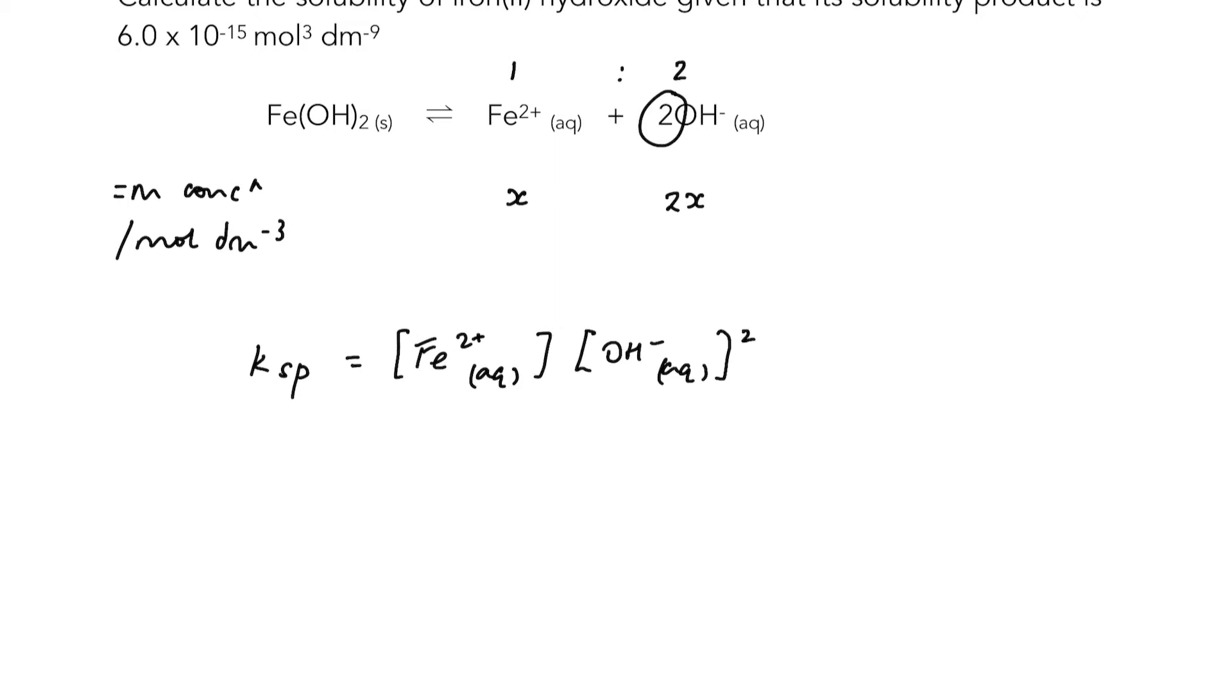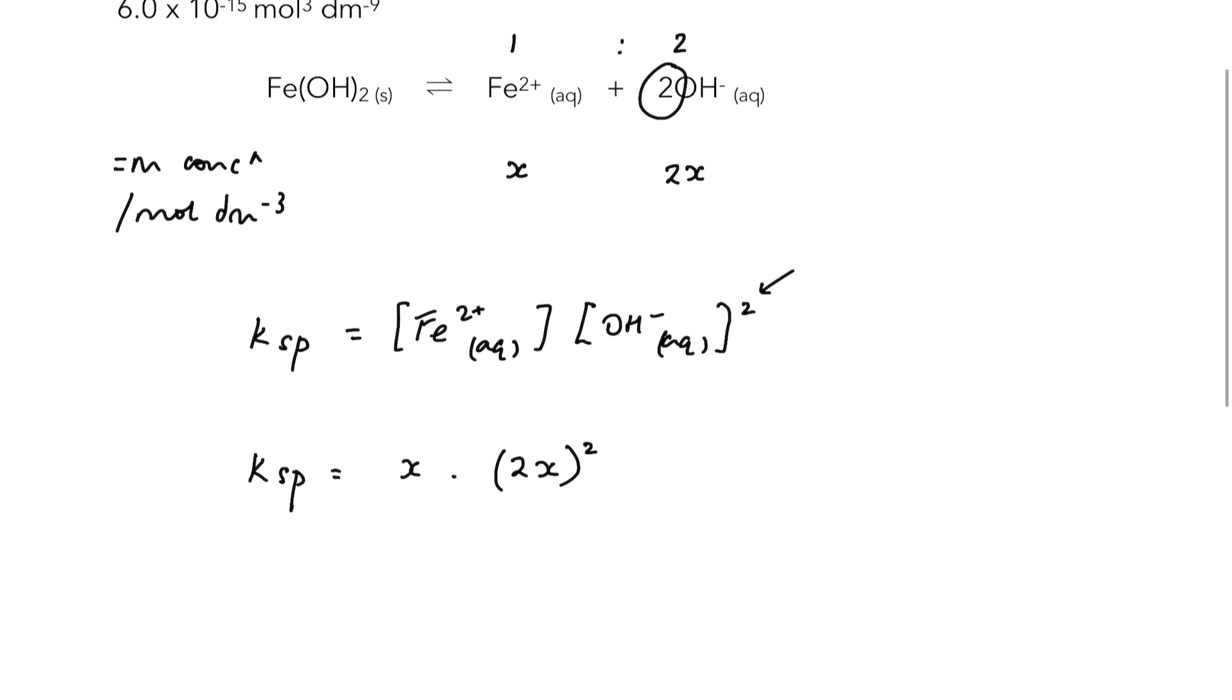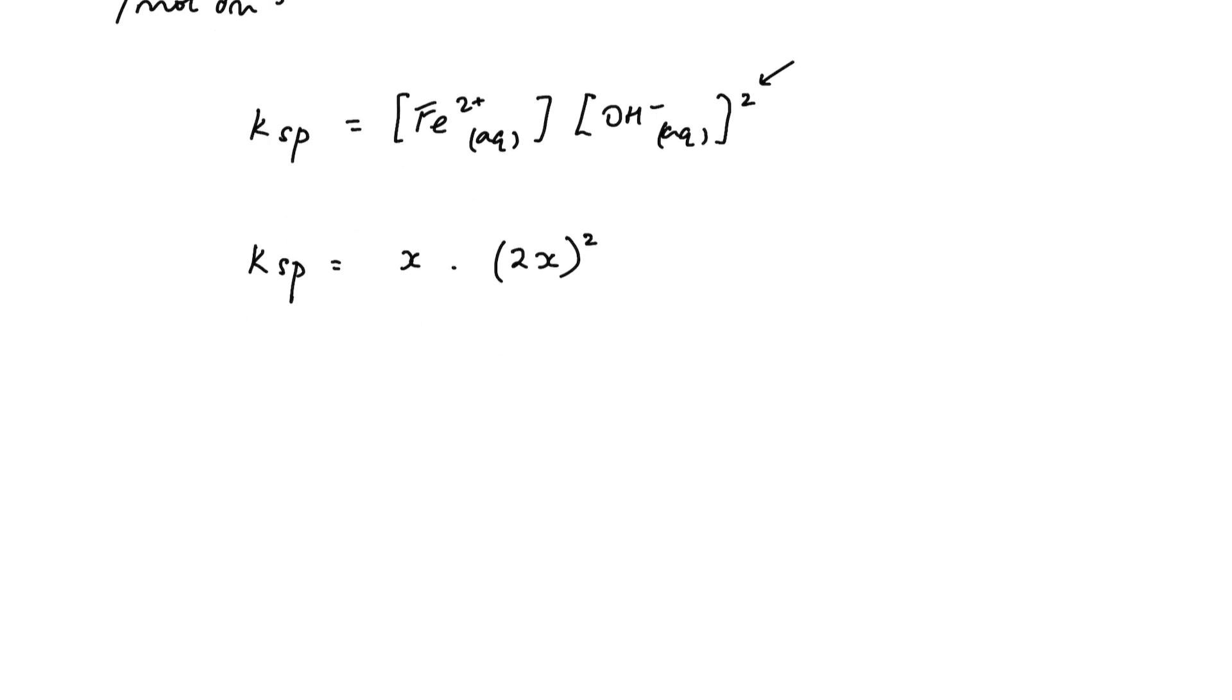Which means that we have Ksp is equal to x times (2x) squared. So 2x is the concentration, raising it to the power of two as per our expression for Ksp. Let's put our numbers into that. We know what solubility product is: 6.0 times 10 to the minus 15 is equal to x times 2x squared.